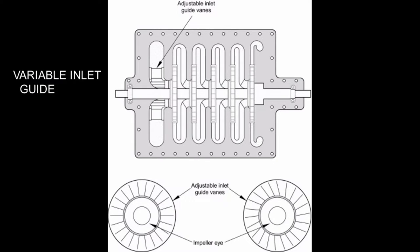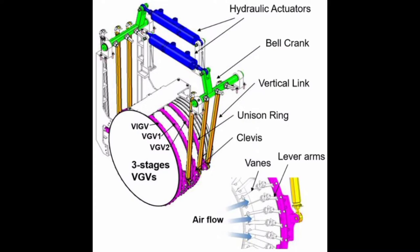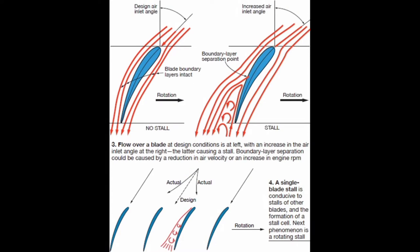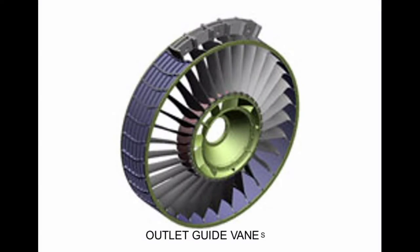Variable inlet guide vanes can control the amount of inlet air to the compressor, and also ensure the air has an appropriate angle of attack for collision with the stator, and also prevent compressor stall.